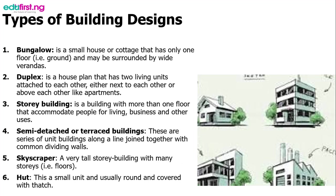The second one is duplex. This is a house plan that has two living room units attached to each other, either next to each other or above each other like apartments. The third one is story building. A story building is a building with more than one floor that accommodates people for living, business and other uses.